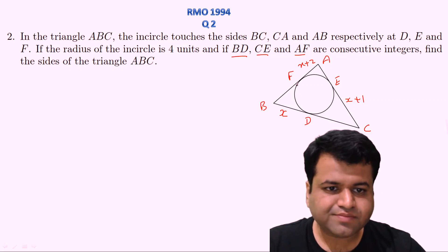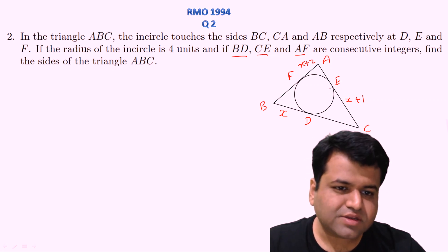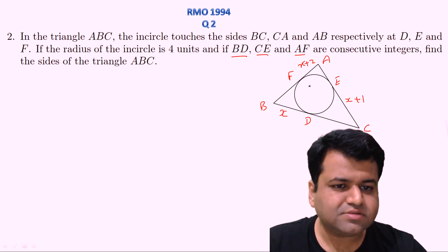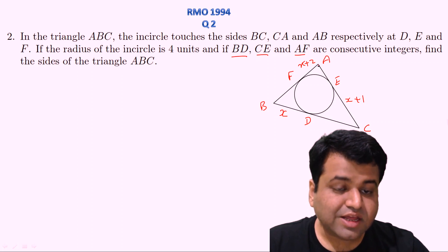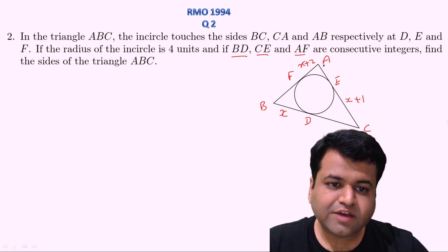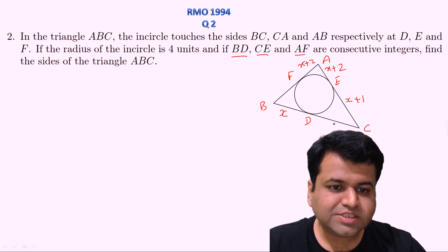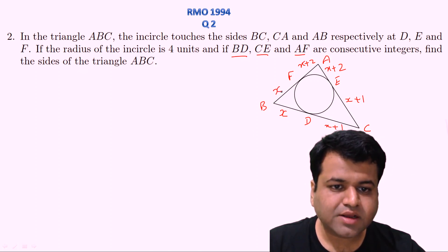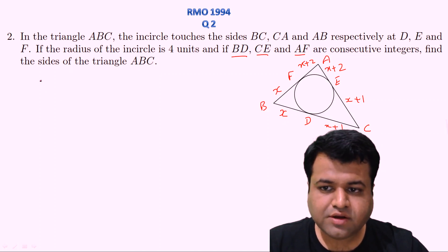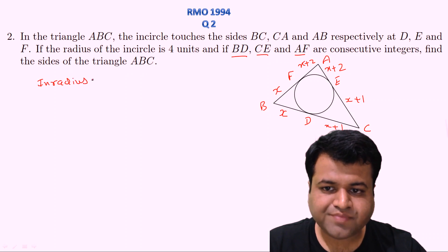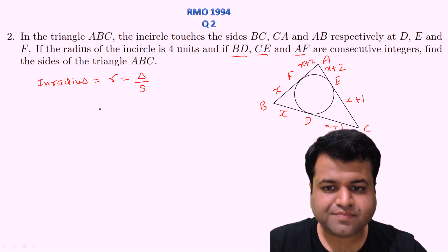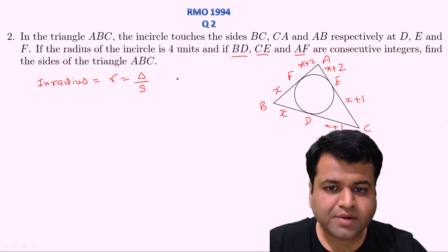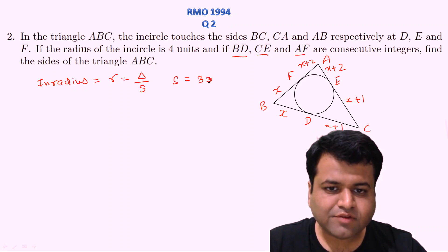The figure may not be to scale, but since the length of tangents from an external point are equal, we have AF = AE = X+2, CE = CD = X+1, and BF = BD = X. Now, the semi-perimeter S = (sum of all sides)/2. The sides are: BC = BD + CD = 2X+1, CA = CE + AE = 2X+3, AB = AF + BF = 2X+2. So S = 3(X+1).